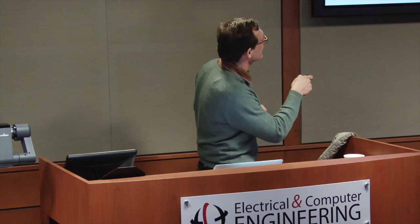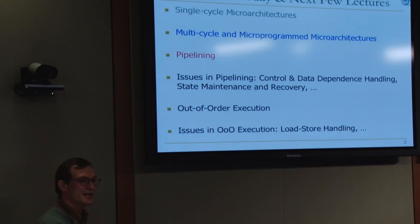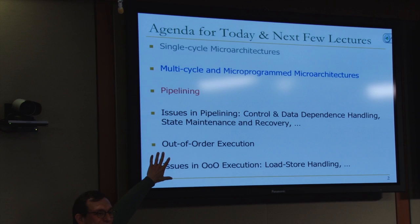And then we'll go into pipelining in the next lecture. We'll cover a lot of issues in pipelining — data and control dependence handling, state maintenance and recovery, precise exceptions. And then we'll go into out-of-order execution and issues in out-of-order execution, such as how to handle load stores. So you'll get a really good idea of how a state-of-the-art processor actually works, assuming you stay in the class.